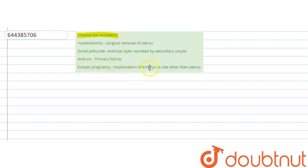that says implantation of embryo at site other than uterus. So the straightforward answer for this question is antrum, because over there in the question it is mentioned that antrum is the primary follicle, whereas the fact is that antrum is the cavity around the ova. It is not a primary follicle, so it is an incorrect option.